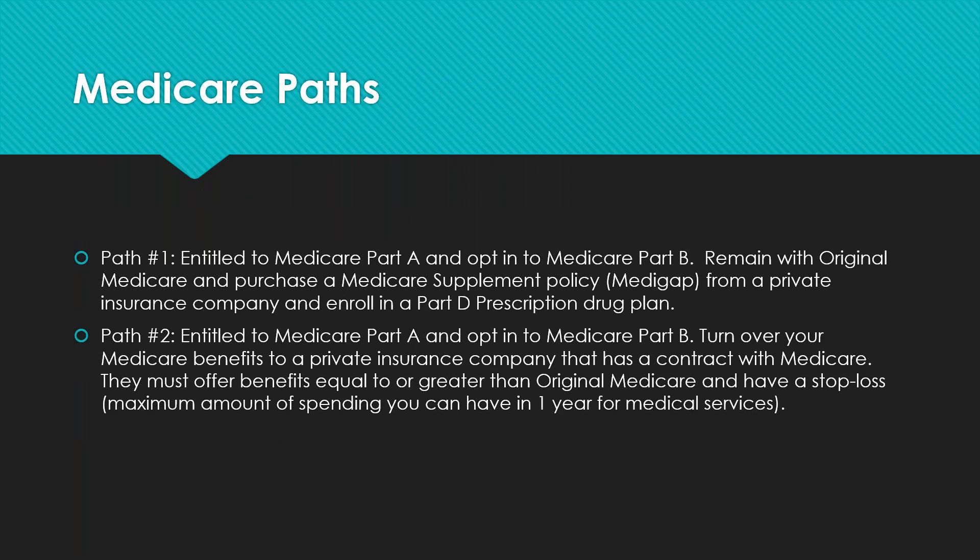There are really two paths for anyone going onto Medicare. If no decision is made, one will be made for you — if you don't choose the second path, you default to the first. Path number one is where you are entitled to Medicare Part A and opt into Medicare Part B, remaining with original Medicare. That's where your claims are paid and the card you use — Medicare is your insurance company and your network.